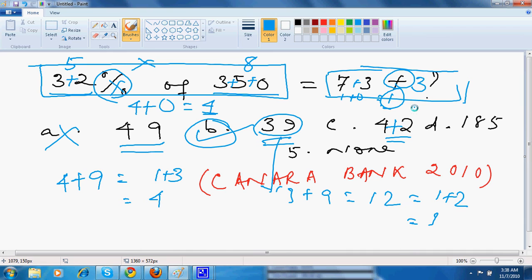Now, 42, 4 plus 2 is 8, it can never be because it should be 3. 185, 1 plus 8 is 9, 9 plus 5 is 14, 1 plus 4 is 5. So this is also not the answer. This is the none figure. So I'm left with two options, one is 39, one is none.